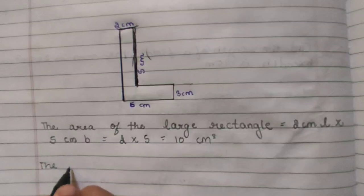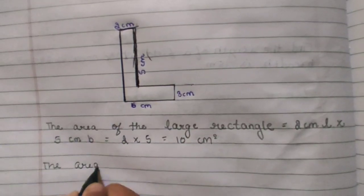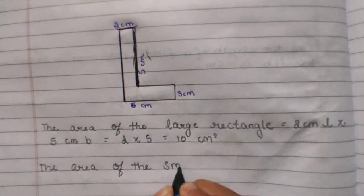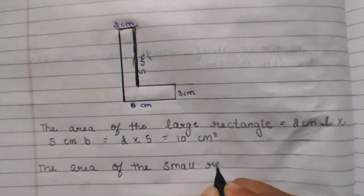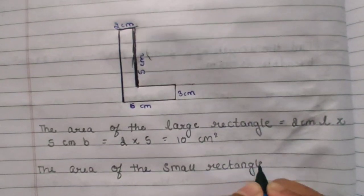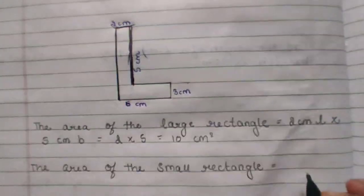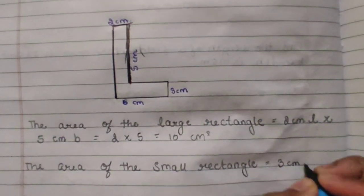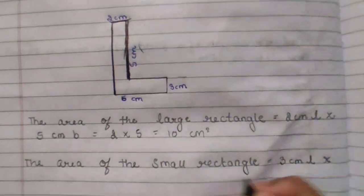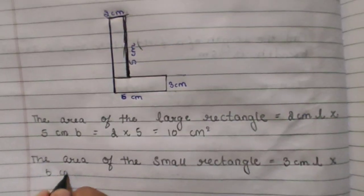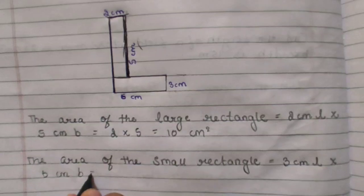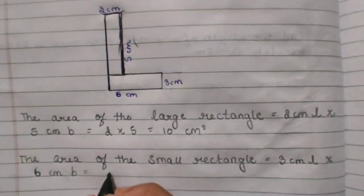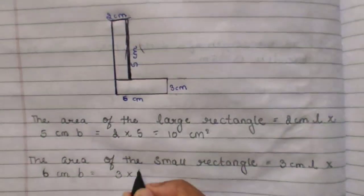The area of the small rectangle equals 3 cm length multiply 6 cm breadth. Now we have to multiply these two length and breadth: 3 multiply 6. We get the answer 18 square cm.